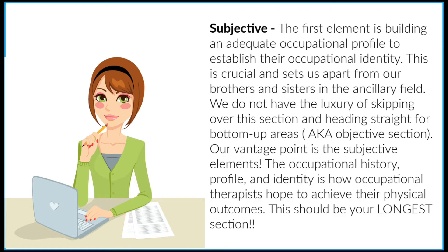Number one: subjective. The first element is building an adequate occupational profile to establish their occupational identity. This is crucial and sets us apart from our brothers and sisters in the ancillary field. We don't have the luxury of skipping over this section and heading straight for bottom-up areas, aka the objective section. Our vantage point is the subjective elements. The occupational history, profile, and identity is how occupational therapists hope to achieve their physical outcomes. This should be your longest section.